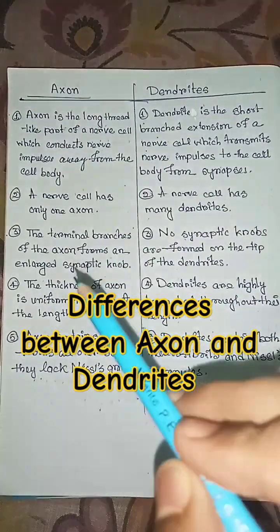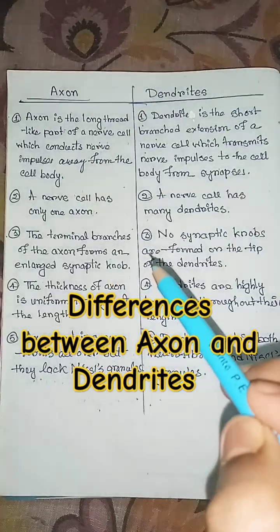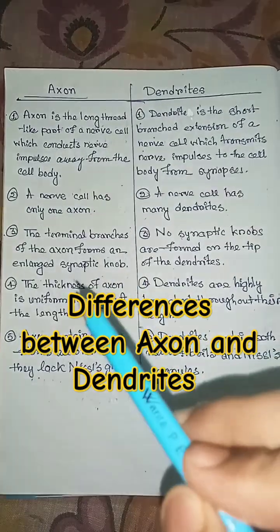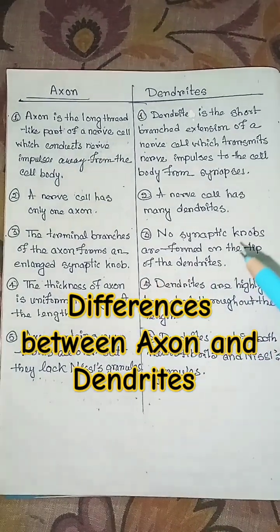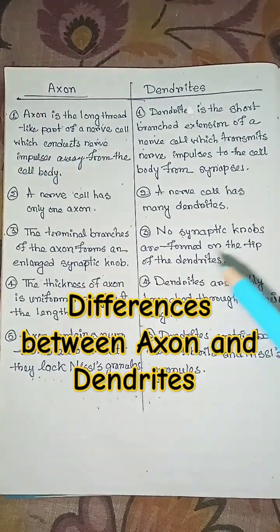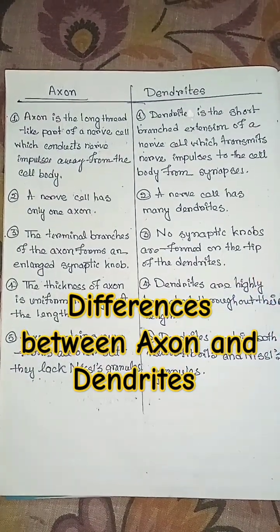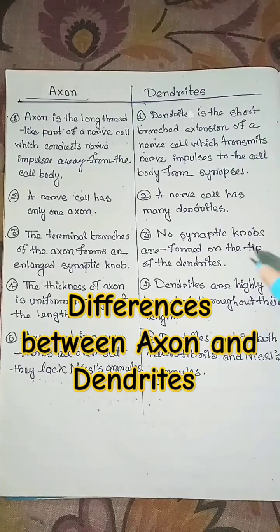The terminal branches of the axon form an enlarged synaptic knob. No synaptic knobs are formed on the tip of the dendrites.